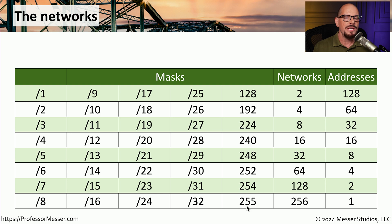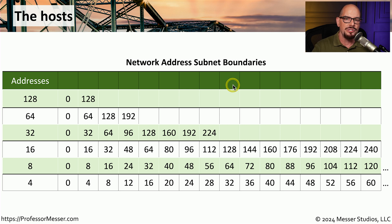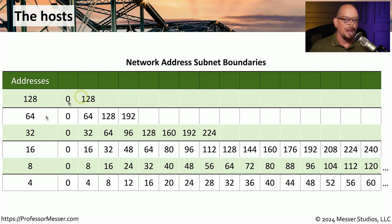Once you've created this chart, you have everything you need to calculate all necessary subnet information without any additional math. If you have problems determining the start of a subnet with 16 or 32 hosts, you may want to write out those subnet boundaries into a separate chart. For example, a network with 128 hosts per network has boundaries at 0 and 128. A network with 64 IP addresses per subnet has boundaries at 0, 64, 128, and 192. You can calculate similar boundaries for networks with 32, 16, 8, and 4 addresses.